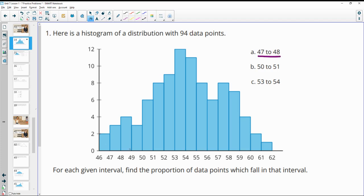If we look at this one, it wants us to look between 47 and 48, so here's the interval it's talking about. If we go over here, there's three data points there.